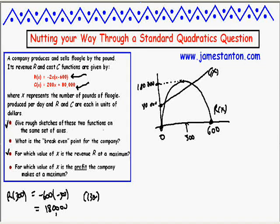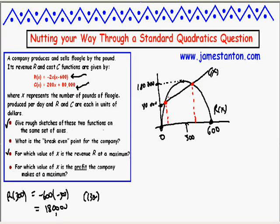Part one done. The next question: what is the break-even point for the company? I probably wouldn't even mention what break-even means — I'll have kids just go at this and see what happens. Using common sense, there are two points that seem interesting in this picture. The first x-value is the first time that revenue starts to become higher than cost — the amount of money you bring in is more than what it costs to make it. So that seems like a really good point for a company: how many pounds of flugel do I need to make to start making a profit?